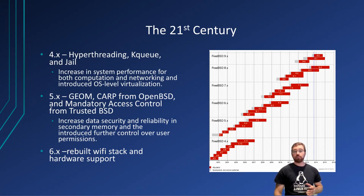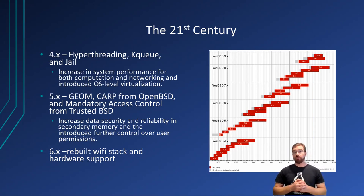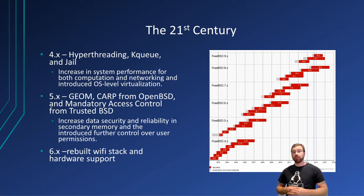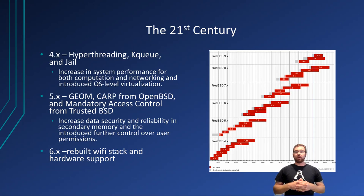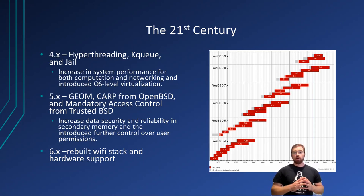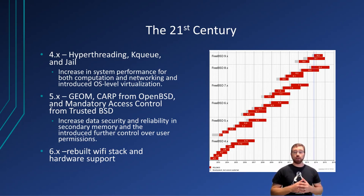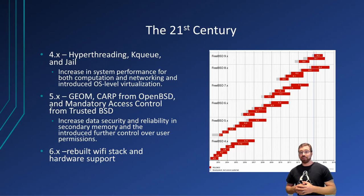Version 5 of FreeBSD introduced a new storage mechanism known as GEOM, which enabled RAID 0, 3, and spanning. This also introduced encryption, compression, virtualization, and file system enhancements such as the ability to encrypt files and use authentication algorithms on files. Imported into this version was the mandatory access control and the Common Address Redundancy Protocol, also known as CARP. CARP enabled failover redundancies for when a host would go down, but would allow the service to seamlessly continue operating if it was running on another host — highly useful if running a server with an SLA for system availability.